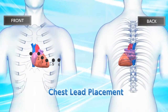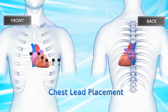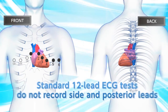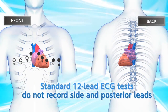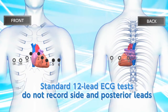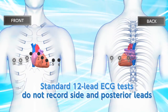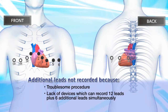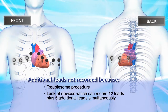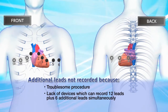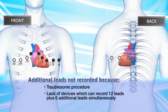Standard 12-lead ECG tests do not record the right-side leads V3R, V4R, and V5R, or the posterior leads V7, V8, and V9, because of the troublesome procedure and lack of devices which can record 12 leads plus 6 additional leads at the same time.